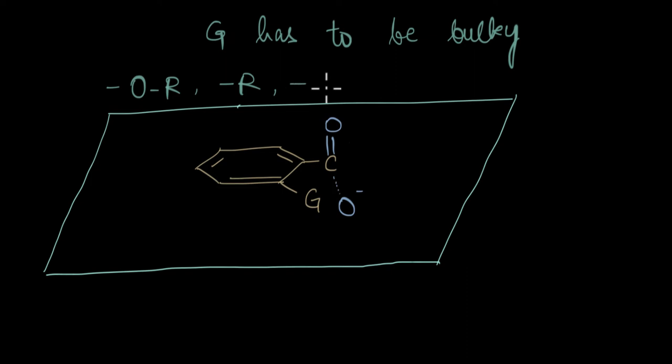The other could be nitro, that is NO2, and more. Once such bulky groups are attached at the ortho position, the carboxylate rotates its bond and protrudes in a different plane.